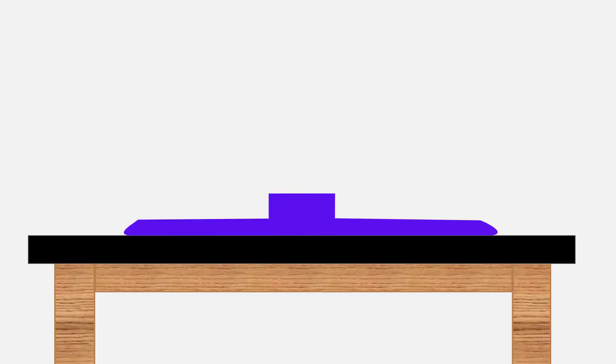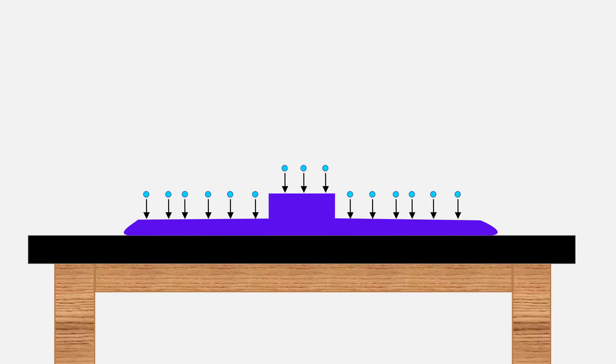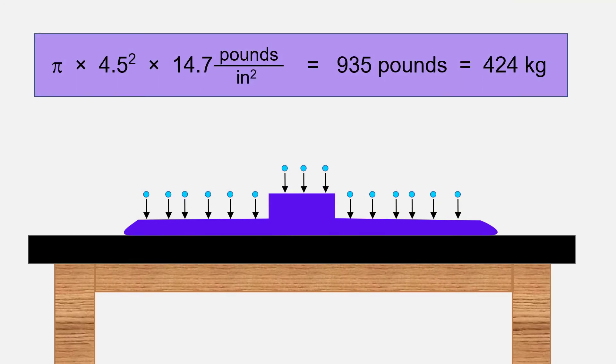We can now create an illustration that tells us why we cannot lift the suction cup off the table. Using circles and arrows, we can illustrate the force occurring on one side of the suction cup while there are no particles to create an opposing force on the other side. Those particles were pushed out. The arrows represent a force of 14.7 pounds per square inch. The suction cup has a radius of 4.5 inches and so the surface area is pi r squared, pi times 4.5 squared times 14.7 pounds of force for every square inch, resulting in a weight of 935 pounds or 424 kilograms.